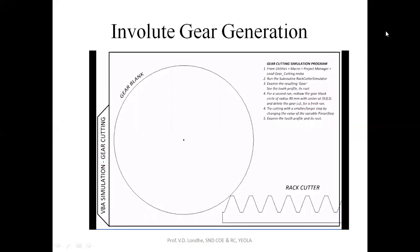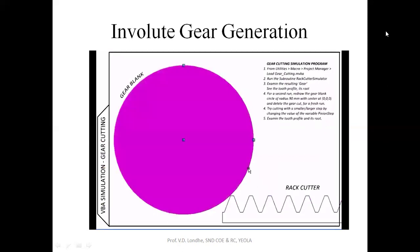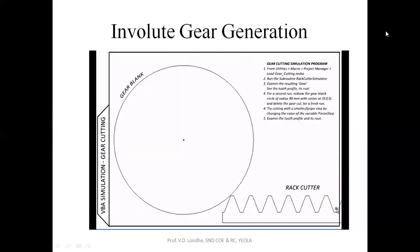Here is a somewhat simplified simulation of the process. So this is our gear blank and this is the rack cutter. Instead of giving one motion to the blank and the other motion to the cutter, we are going to give both the motions, rotation as well as translation, to the rack cutter. So this is how it looks.